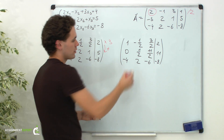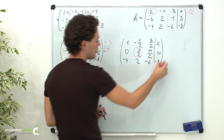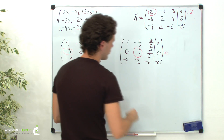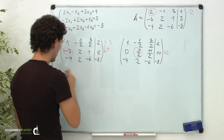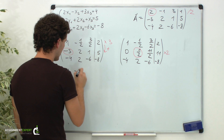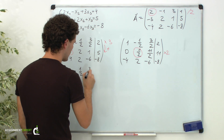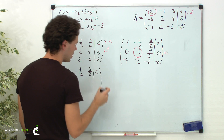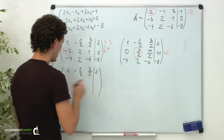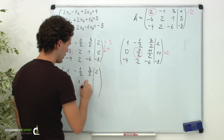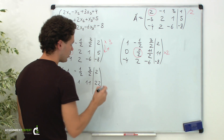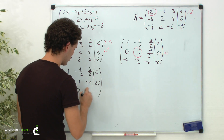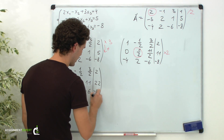Now, to obtain 1 on the main diagonal, we will multiply the second row by 2. The first row is 1, negative 1 half, 3 halves, and 2. The second row multiplied by 2 is 0, 1, 11, and 22. And the third row without changes: negative 4, 2, negative 6, and negative 8.